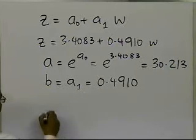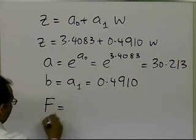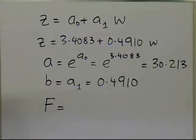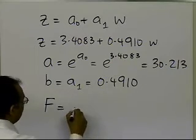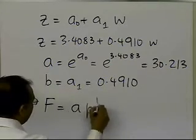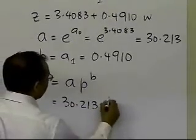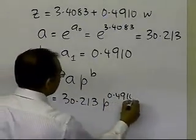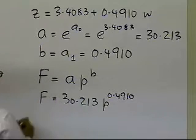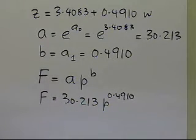What you are basically finding out is that the relationship between the flow rate and the pressure is F equals a p raised to the power b. A is 30.213 times p raised to the power b, which is 0.4910. That's the relationship between flow rate and pressure.